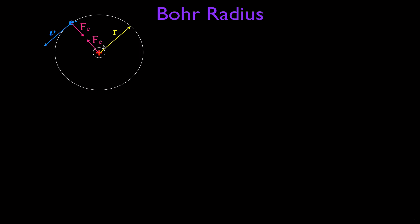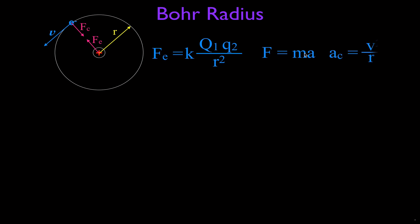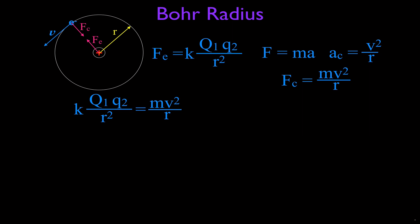We're going to use that to calculate the Bohr radius. The electric force can be calculated using Coulomb's law: K, Coulomb's constant, times one charge times the magnitude of the other charge, divided by the distance between them squared. The centripetal force comes from Newton's second law, F = MA. If something is going in a circular orbit, the acceleration is V squared over R, so the centripetal force is MV squared divided by R. Setting these two forces equal: K times Q1 Q2 divided by R squared equals MV squared over R.